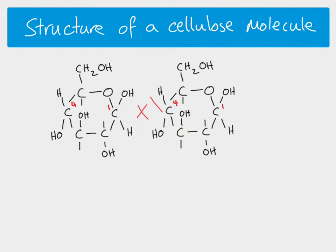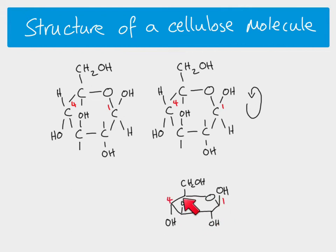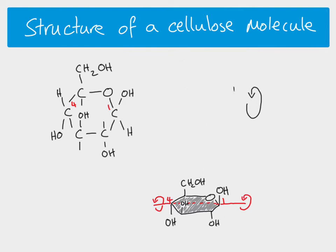What we need to do is rotate the second beta glucose molecule. Remember that the ring is actually a flat plane, so this is three-dimensional — the hydroxyl group is above the ring here, and another hydroxyl group is sticking below. If you imagine a line going through the middle and spin the molecule around on that axis, carbon four's hydroxyl group, which was previously below the ring, is now above the ring after rotation.